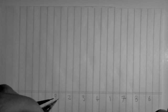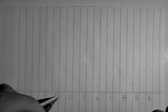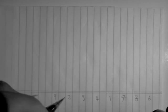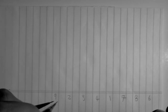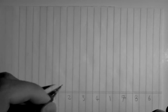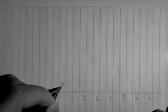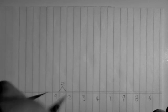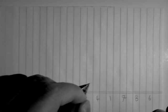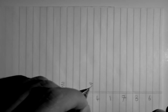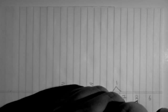Let's construct a loser tree. Between 2 and 1, 2 is smaller. Between 3 and 4, 3 is smaller. Between 1 and 7, 1 is smaller. Between 8 and 6, 6 is smaller.